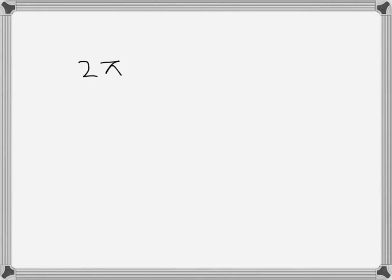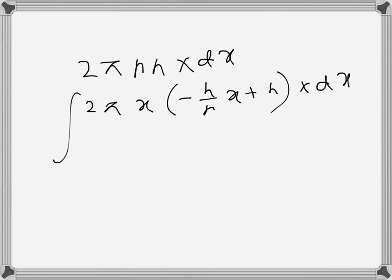Our expression for the volume of one section is 2πrh times dx. So 2πr is x, and h is minus h over r times x plus h, times dx.